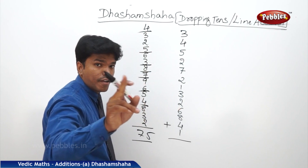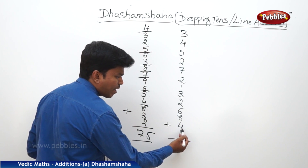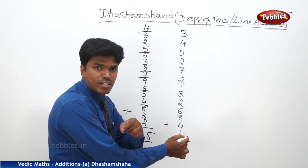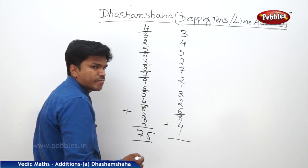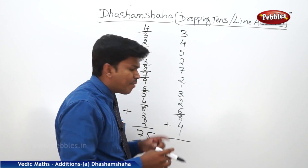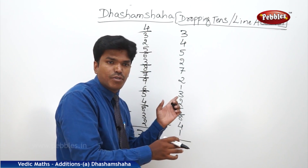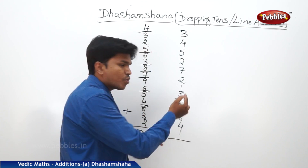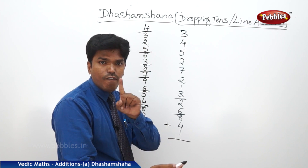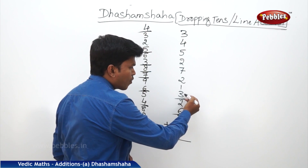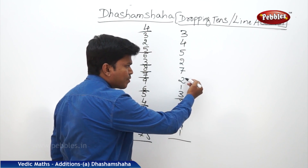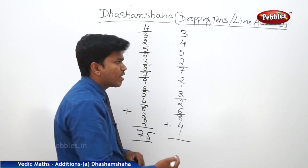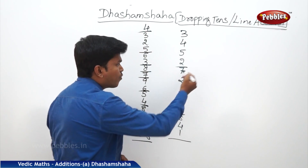What is 1 plus 4? 5. 5 plus 8? 13 — more than 10, so drop it. Remaining is 3. Carry 3 to the next number. 3 plus 6? 9. 9 plus 2? 11 — again more than 10, so drop it. Remaining is 1. 1 plus 3? 4. 4 plus 1? 5. 5 plus 2? 7. 7 plus 7? 14 — drop it. Remaining is 4.